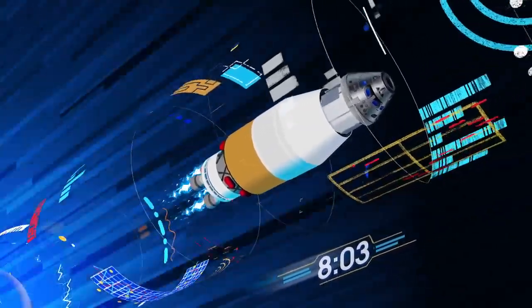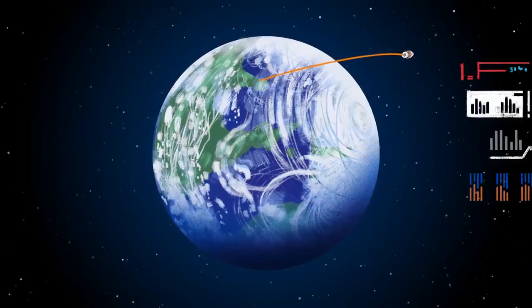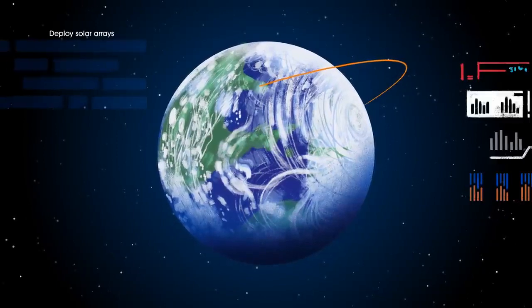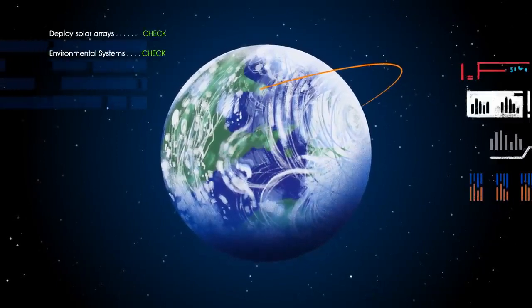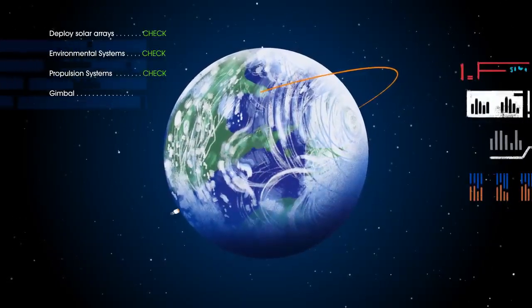The upper stage fires briefly, placing Orion into a parking orbit around the Earth. Here, the crew reconfigure the spacecraft and check systems to confirm everything is ready for deep space travel.